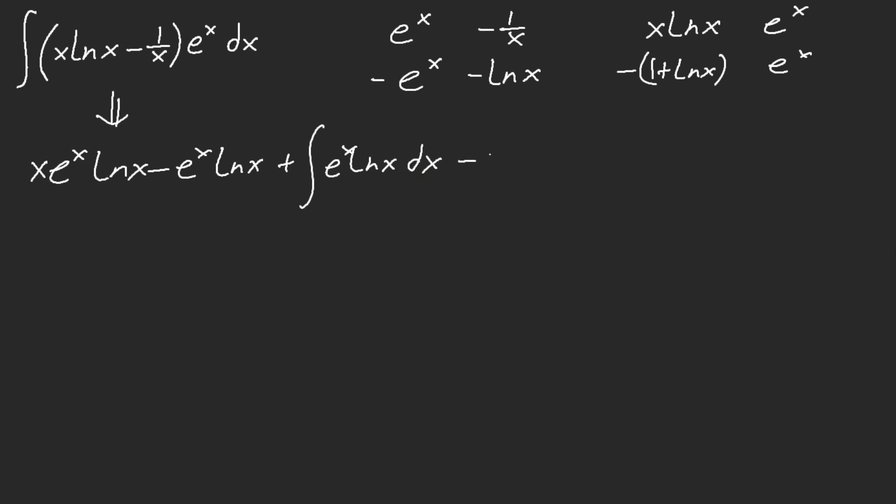and here, we have a negative e to the x ln of x. However, with that plus 1, we also have minus e to the x dx. So, this cancels out, and we're left with this.